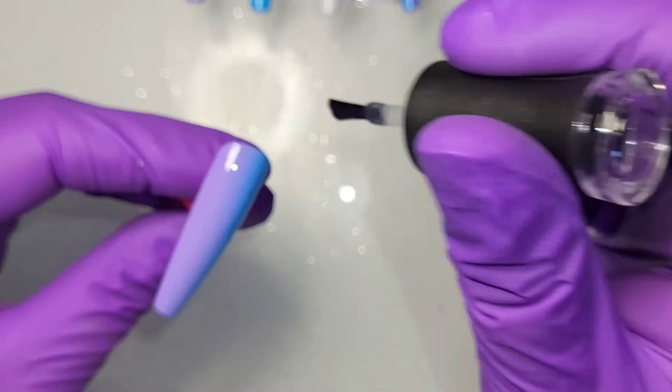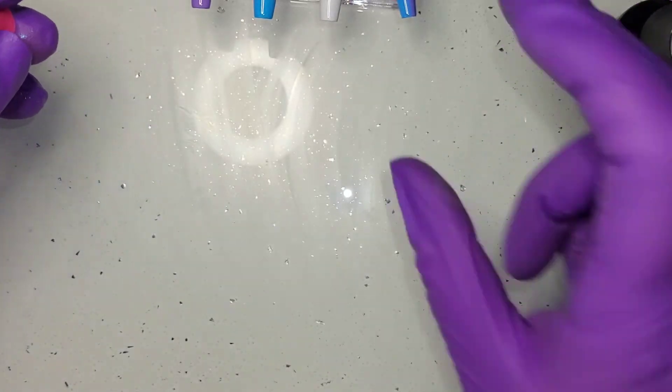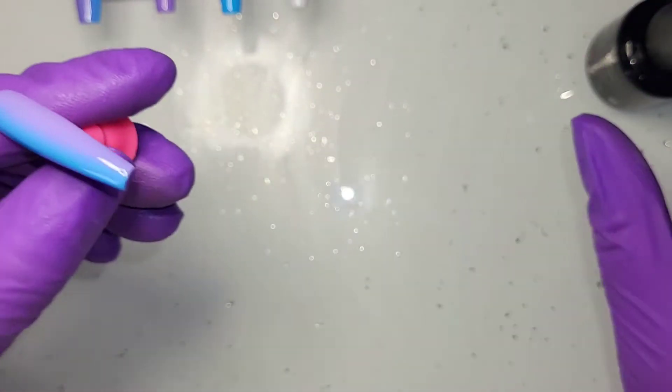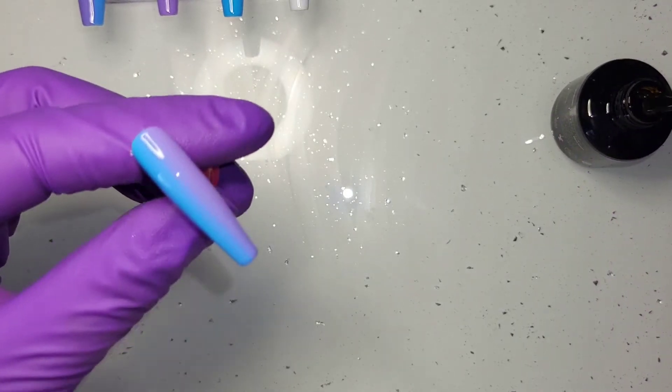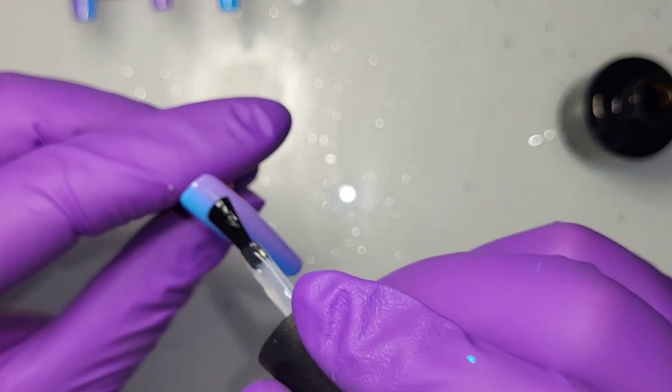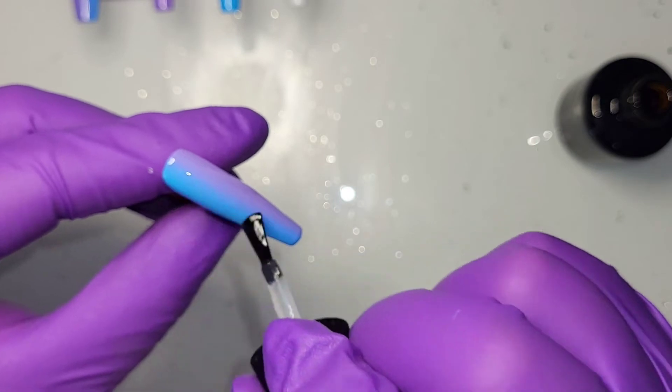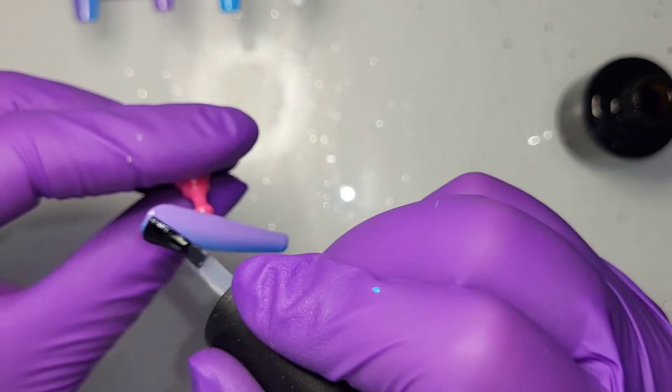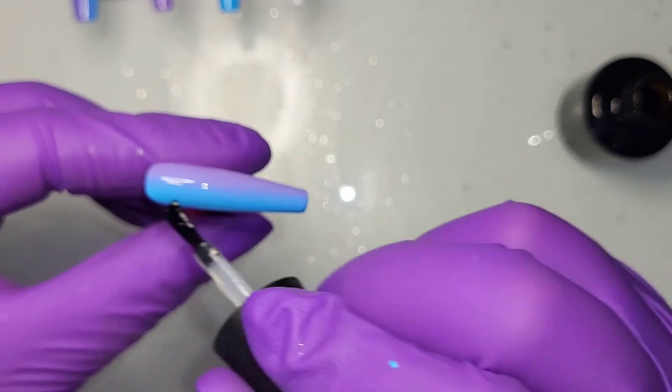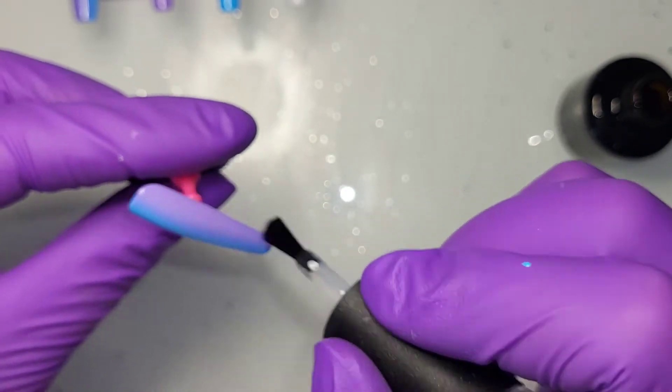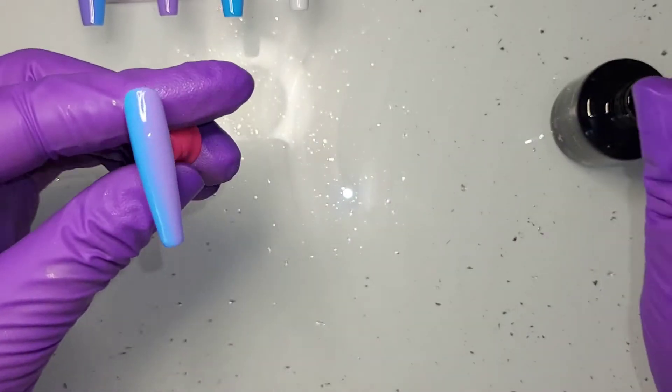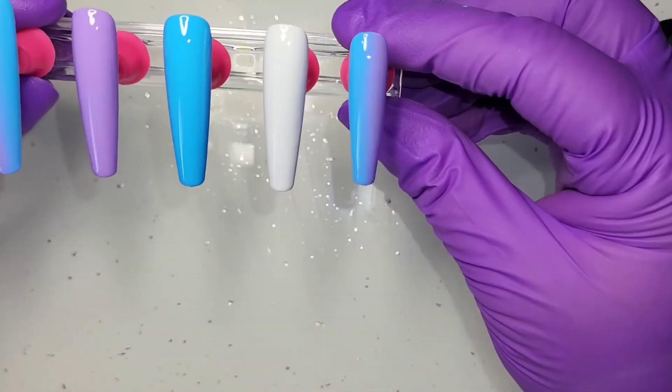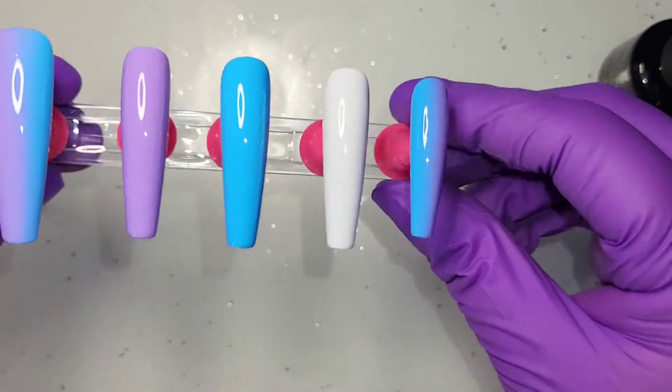I find that this always works with top coat and then rubbing. When I've tried with the sticky layer, it doesn't work for me. It's not chromey enough. Maybe I'll show you in a minute what I mean. I'm going to pop those two in the lamp for a 30-second cure, then we'll rub the chrome powder on.